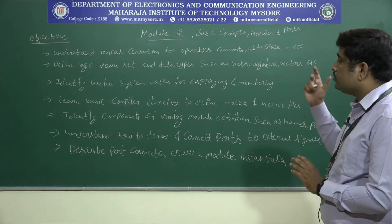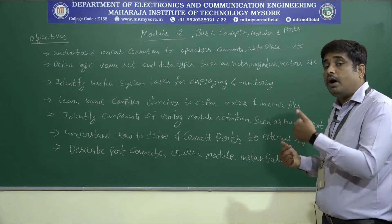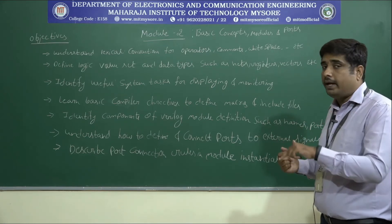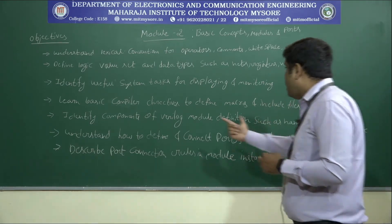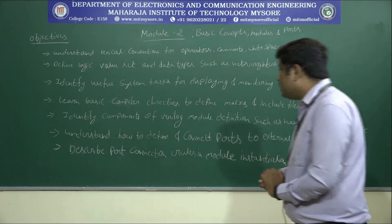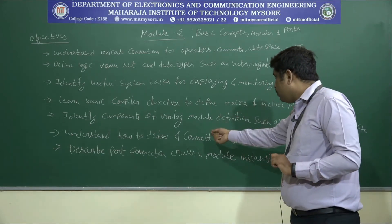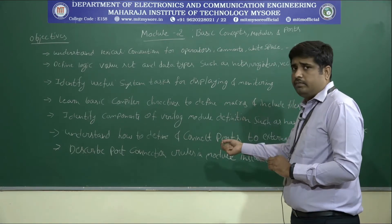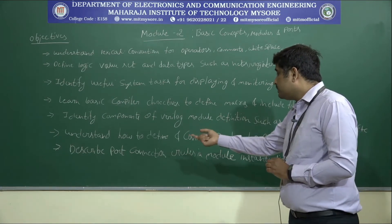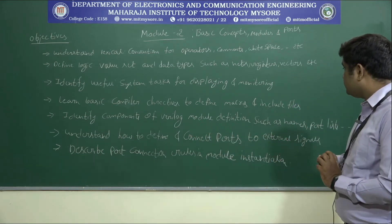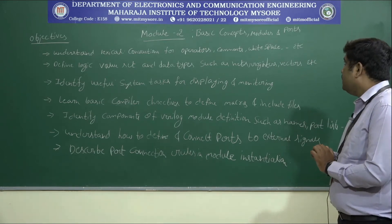Once you have studied ports, the next objective is to understand how to define a port — either input port, output port, buffer, or inout. After defining the port, the next step is how to connect the ports to external signals. The last objective is to describe port connection rules in module instantiation. Once you define the port, there is a rule required for port connection, which is defined in the last learning objective. These are all the objectives for Module 2: Basic Concepts, Modules and Ports.